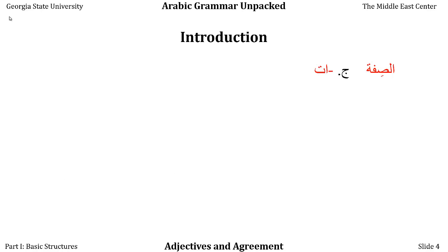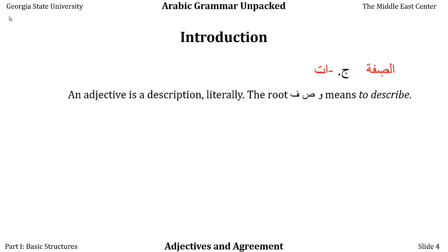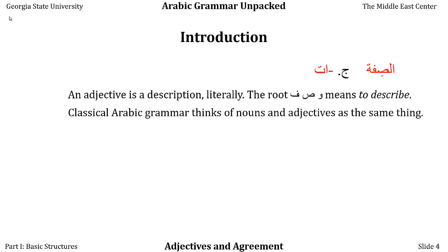The word siffa in Arabic means adjective — literally, a description. The root waw-sad-fa means to describe. Because the first letter of the root is waw, sometimes strange things happen to it. In this case, it simply disappears, to make siffa instead of wasfa, which is probably what it was long ago in time.